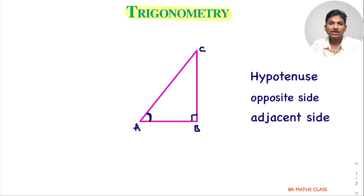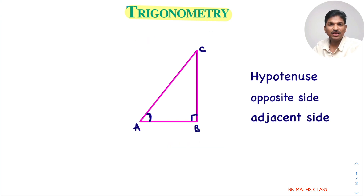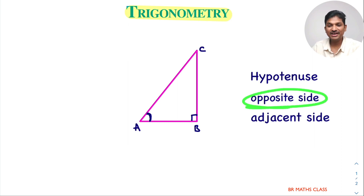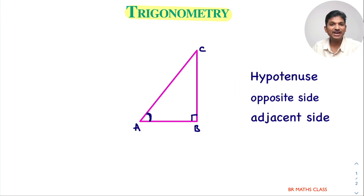The first thing we need to learn in trigonometry: in this class 10th trigonometry chapter, whatever triangles we use, they are all right angle triangles. In these, you will frequently use three words — hypotenuse, opposite side, and adjacent side. It is important to know which side is the hypotenuse, which side is the opposite side to the given angle, and which side is the adjacent side of a given angle.